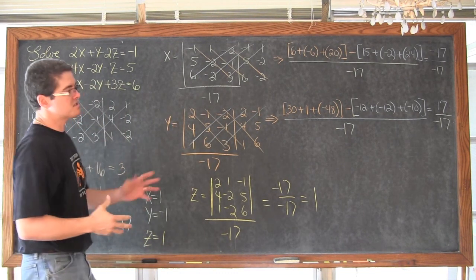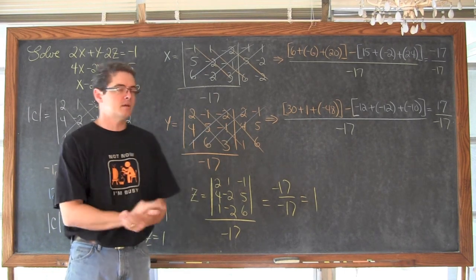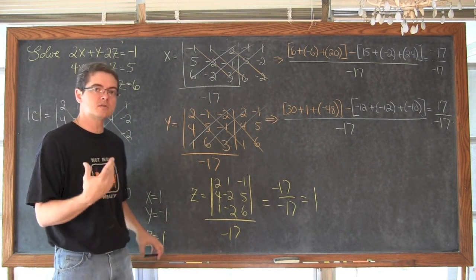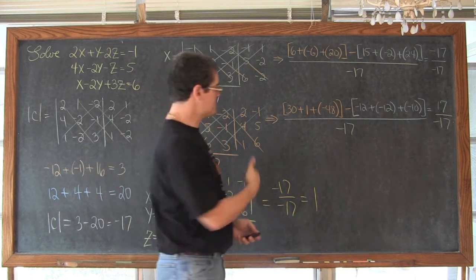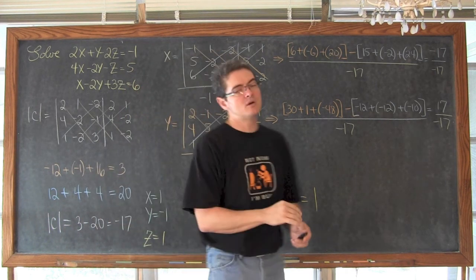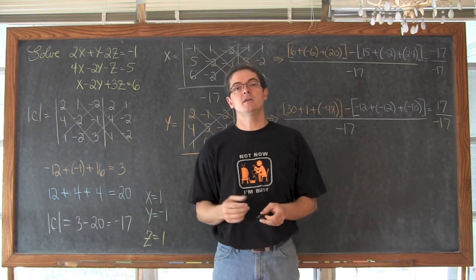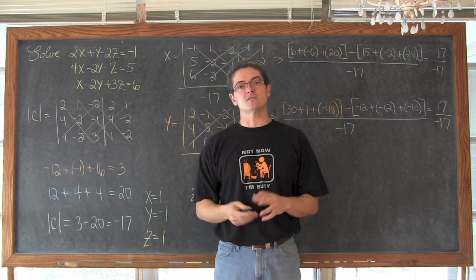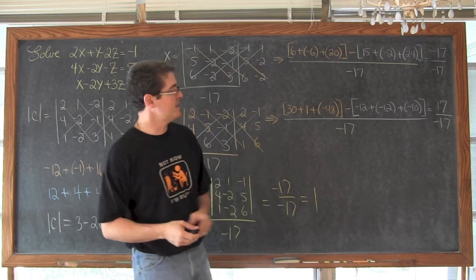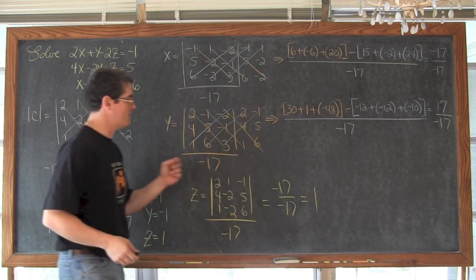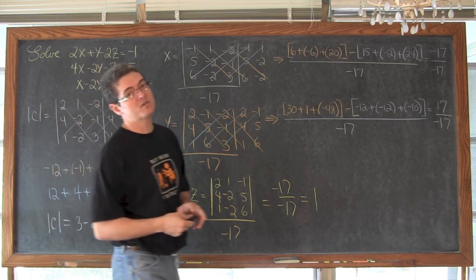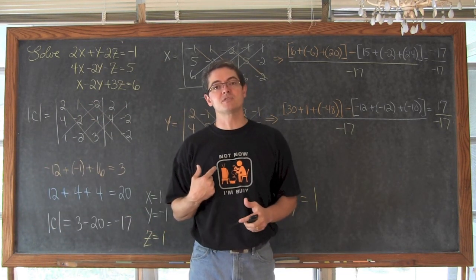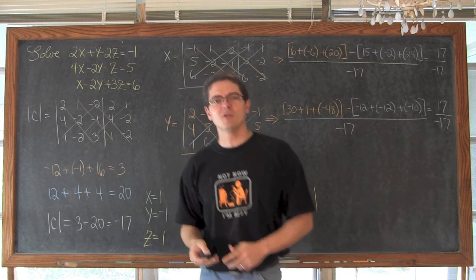It is still a little bit tedious writing these determinants out and doing the diagonals and multiplying, but this went much, much quicker than doing the same question with the Gaussian elimination method. You can see that it definitely has some very good benefits of helping you get your homework done faster. I am Mr. Tarrou, BAM! Go do your homework!